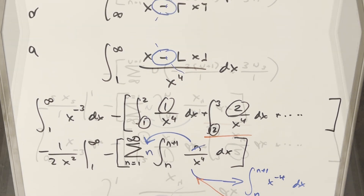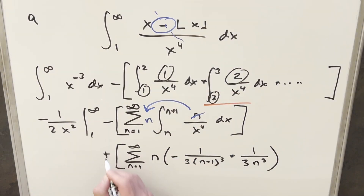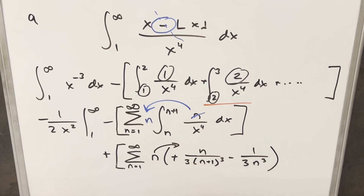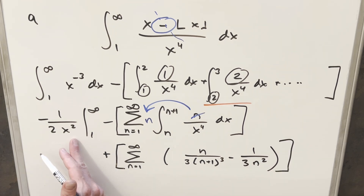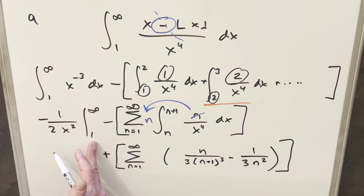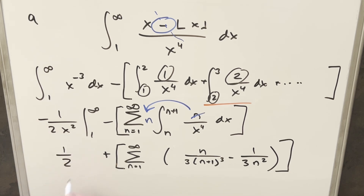Now let's plug this value back in and distribute the minus sign inside the sum. That turns one term to a plus and another to a minus. After distributing n back in, we get n in the numerator, and dividing into the n cubed gives n squared in the denominator. Coming back to the first integral: since we have x squared in the denominator, evaluating at infinity goes to zero. Evaluating at one gives us one half.